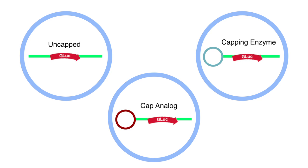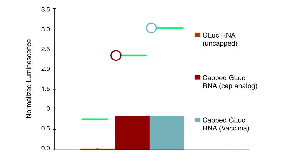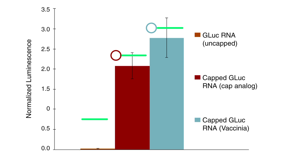The next step is to transfect the capped and uncapped mRNA transcripts into HeLa cells. Ultimately, luciferase activity resulting from uncapped or capped mRNA is compared in the HeLa cell culture supernatant.